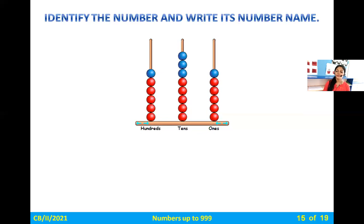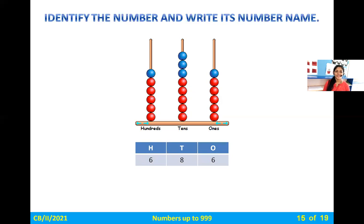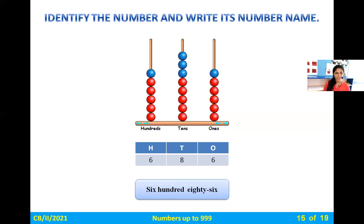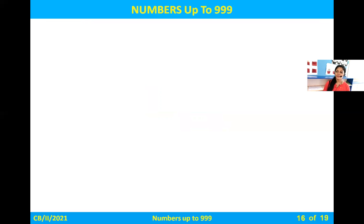One more — you have to do it on your own. See the beads in the hundreds place, then note the tens place (count in tens), and ones you count in ones. Hundreds you count in hundreds, tens place in tens, ones place in ones. The answer is 686 — six hundred eighty-six.